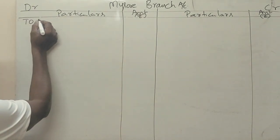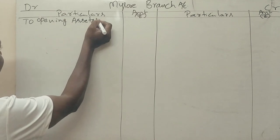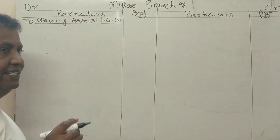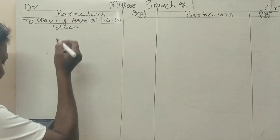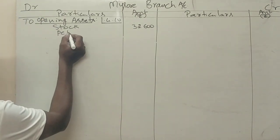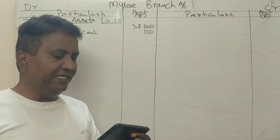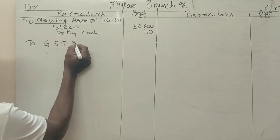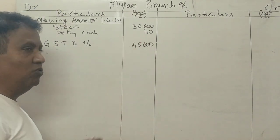We prepare the Mysore Branch Account. On the debit side, we record the opening assets as of 1st April 2010: stock — 32,600 rupees and petty cash — 110 rupees. Then goods sent to branch during the year are entered on the debit side: goods sent to branch account — 45,600 rupees, representing the head office supplying goods to the branch.